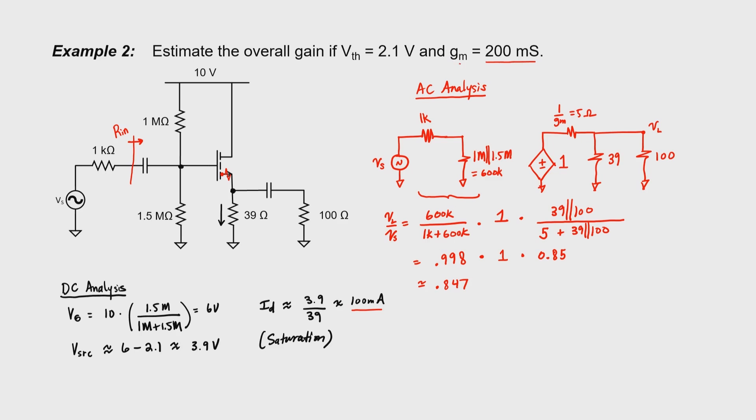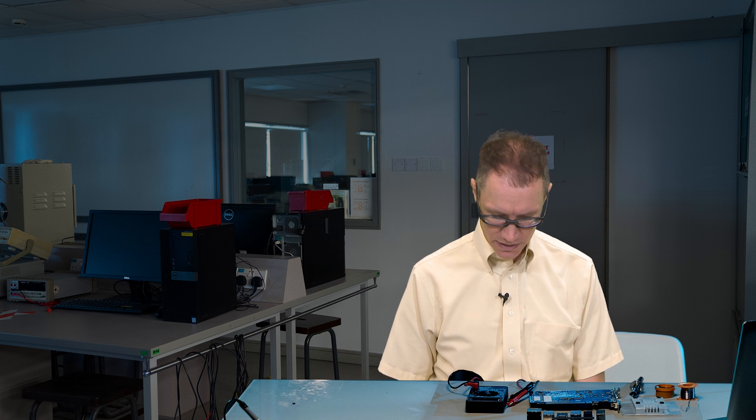Our transconductance of 200 mS was just an estimate — it might not really be the transconductance. If the transconductance is only 80 mS, the gain drops to 0.69. So that's something to keep in mind when you design these circuits — you can expect substantial swings in the gain if your estimate of the transconductance is off a little bit. I simulated this circuit in LTSpice and the gain came out to be 0.825. We calculated a gain of 0.847, so these numbers are quite similar, but I'm still not confident that if I were to actually build the circuit the gain would be this high — it might really be closer to 0.6 or 0.7 if we got a bad transistor from the drawer.